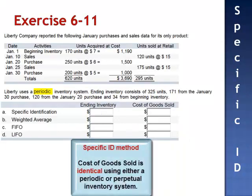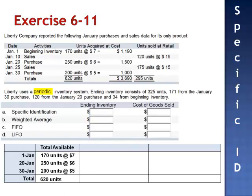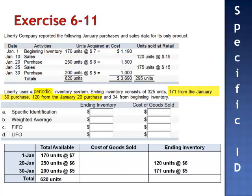The specific identification method yields the same results using either the periodic or the perpetual inventory system, as ending inventory is determined by referring back to the specific purchase invoice. We still begin with the total units available for sale — the units from beginning inventory plus the units purchased during the period. We're told that the ending inventory consists of 171 units from the January 30 purchase, 120 units from the January 20 purchase, and 34 units from beginning inventory. The value of ending inventory is $238 plus $720 plus $855, and the value of the 325 units in ending inventory is $1,813.